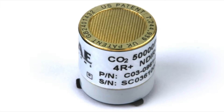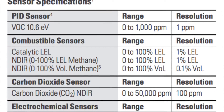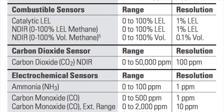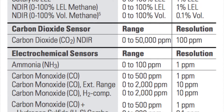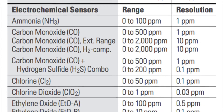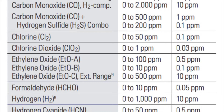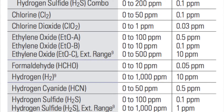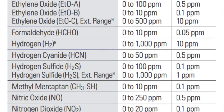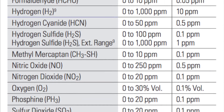There is a full electrochemical sensor suite available, including ammonia, carbon monoxide (including extended range and hydrogen compensated options), a DuoTox carbon monoxide and hydrogen sulfide sensor, chlorine, chlorine dioxide, ethylene oxide, formaldehyde, hydrogen cyanide, hydrogen sulfide, methyl mercaptan, nitric oxide, nitrogen dioxide, oxygen, phosphine, and sulfur dioxide.